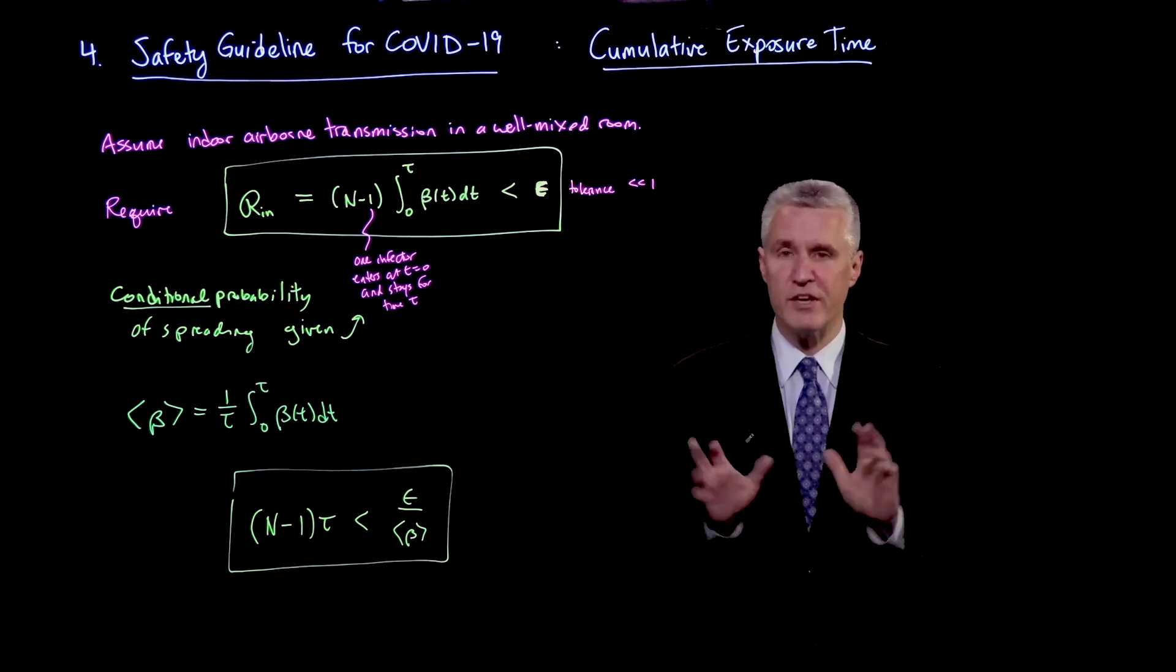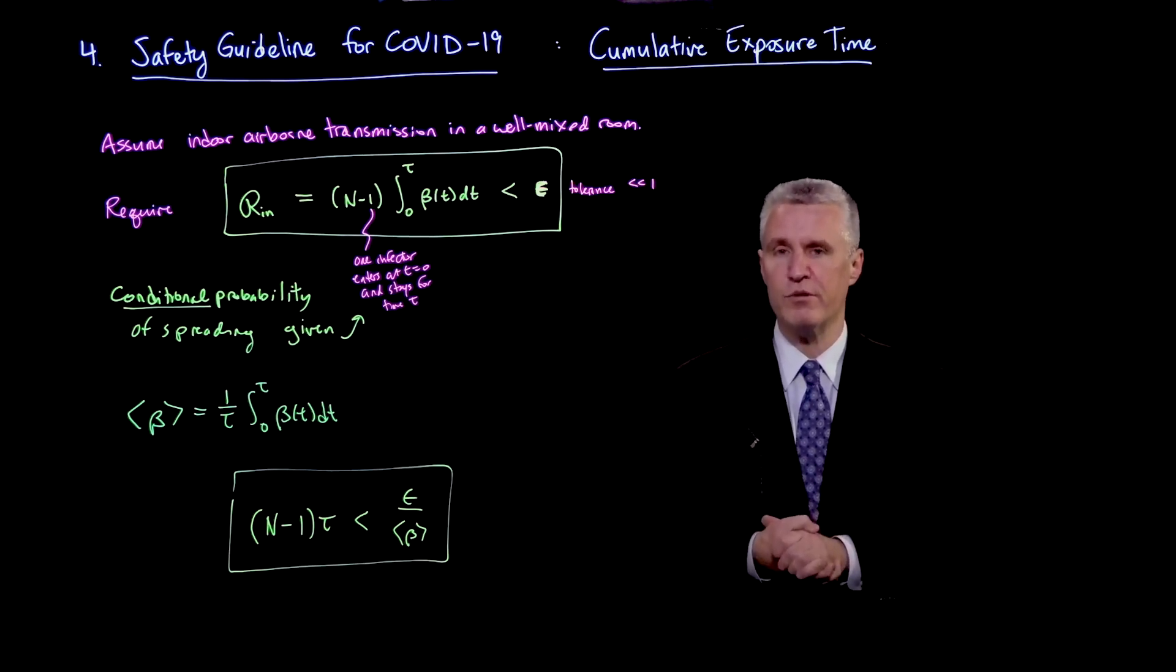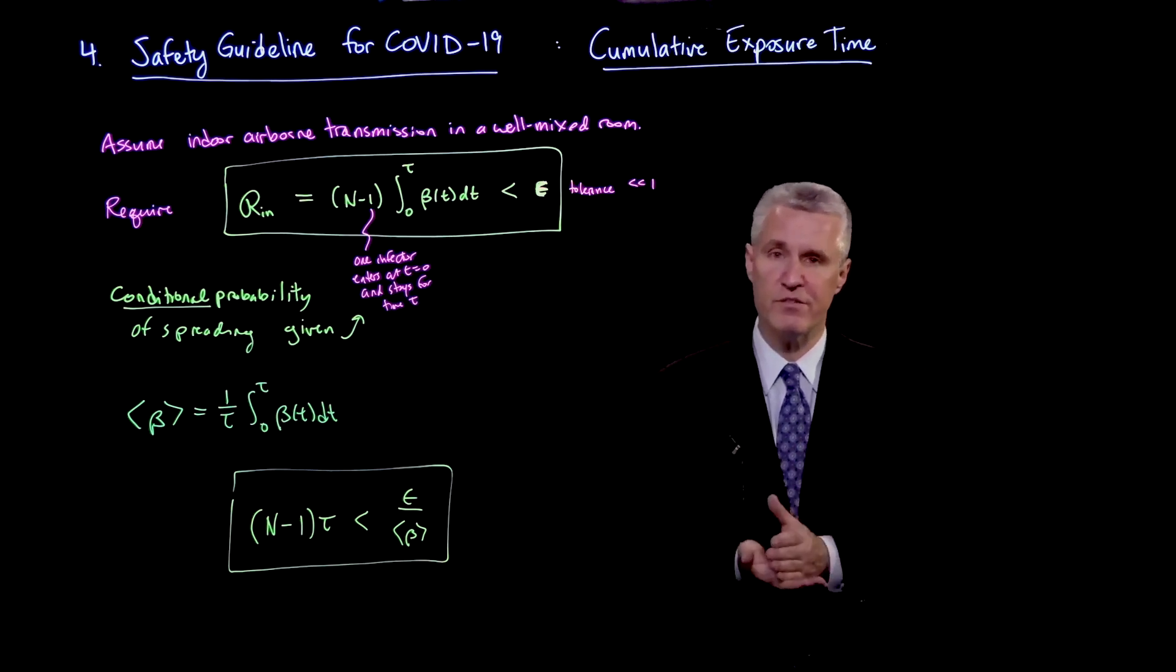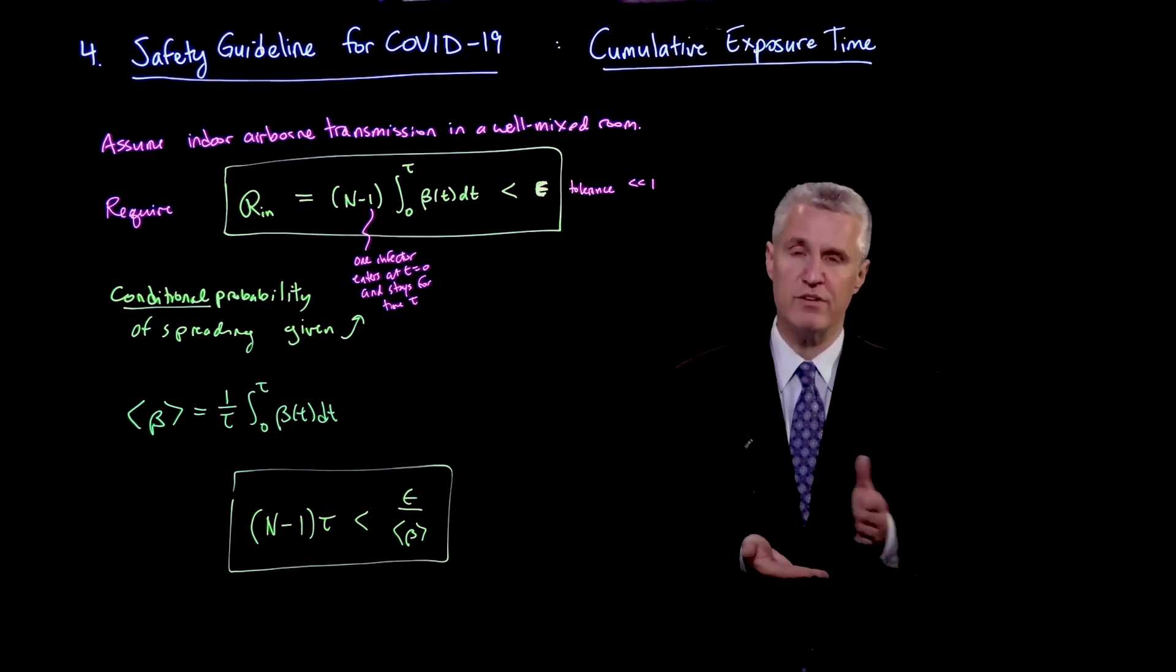You will also find limits on time. The CDC defines a contact where transmission is possible as being within six feet of an infectious person for more than 15 minutes. So there's a time constraint there. So it says that after 15 minutes, you should expect to be potentially infected.